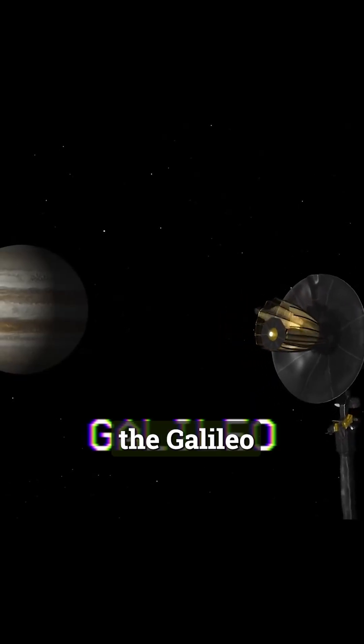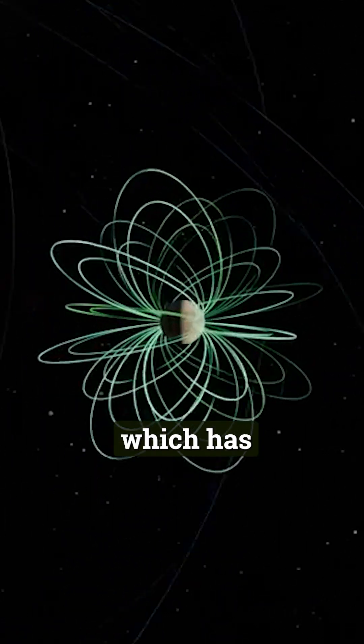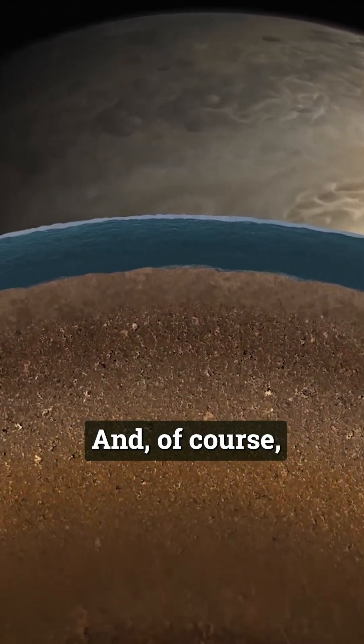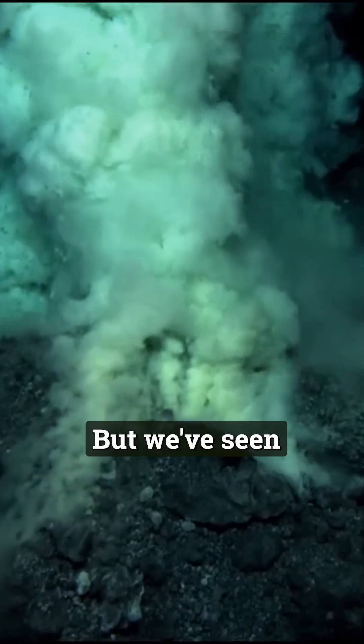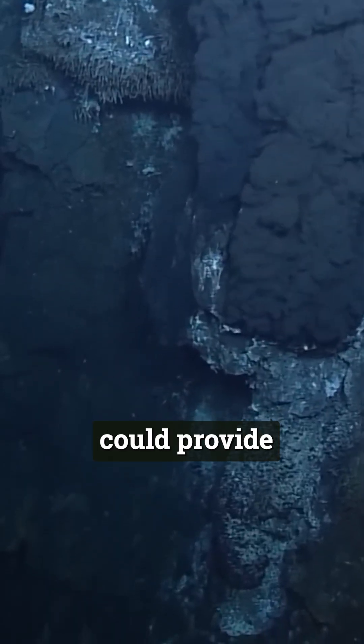In the 90s, the Galileo spacecraft did a dozen flybys of Europa and discovered an induced magnetic field, which has led scientists to believe a global ocean is underneath this icy surface. And of course, the conditions would be harsh, but we've seen life thrive in some very unlikely places on Earth. And Europa's oceans could provide similar conditions.